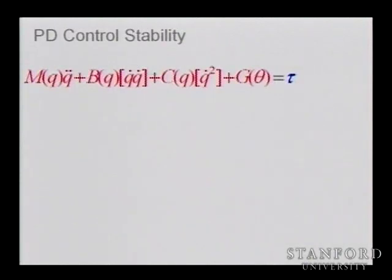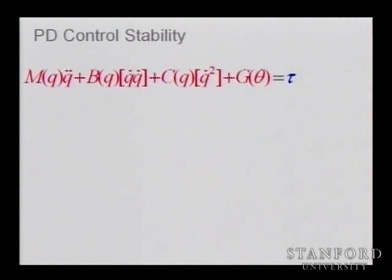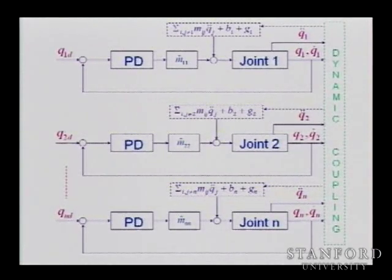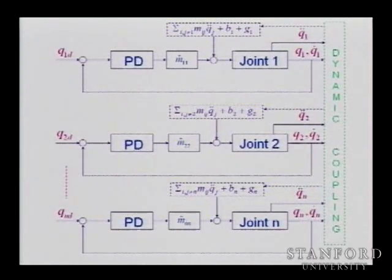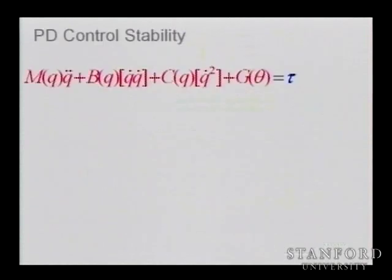The stability of a system that is highly nonlinear and interactive is not evident. How can we prove that this system with a PD controller, with all these disturbance forces from the interaction, is stable? The answer involves energy. In fact, in the late 1970s, there were many papers written about PD control stability proving that yes, the system can be stable with just a PD controller.